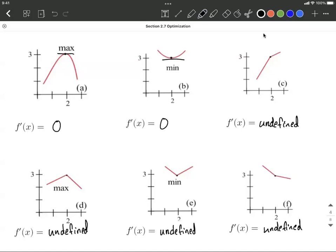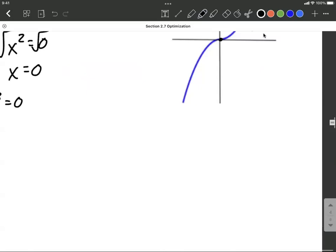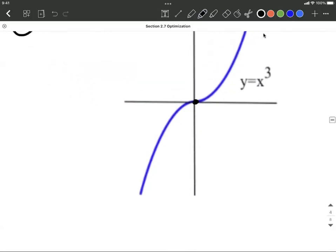The same could be true like on our previous example with the x cube graph. The derivative was equal to 0 at 0. We looked at this one up here. Horizontal tangent line going across there, but it doesn't produce a maximum or minimum.